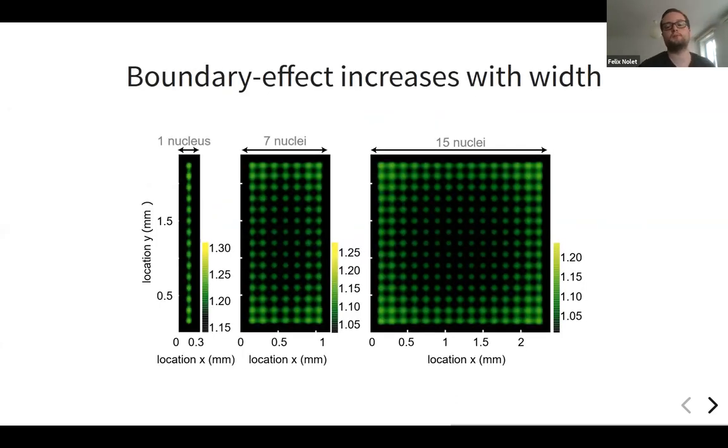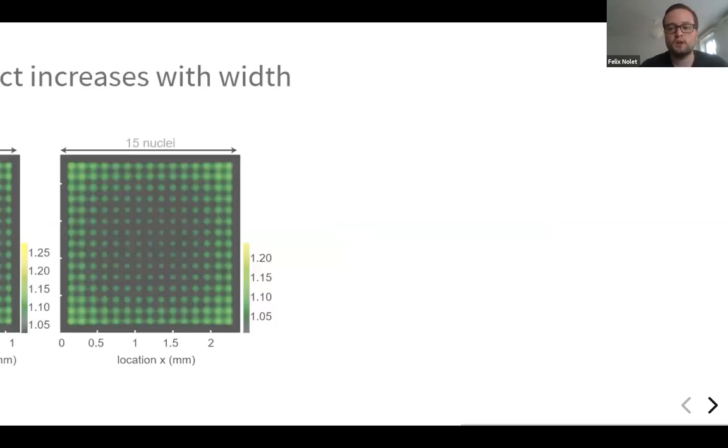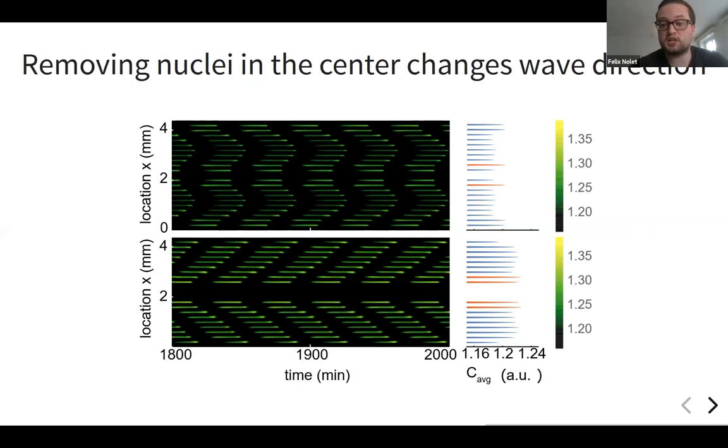We can also simulate the same model in 2D. Then we can change the width of our domain. On the left, you see a tube with one row of nuclei. If you look closely, you can see that the average concentration is a little bit higher for nuclei at the boundary than in the middle. But this effect is much clearer if we increase the width of the tube. For seven or 15 rows when it becomes a square, we clearly see that on average, the nuclei at the boundary will have a higher concentration than the nuclei in the middle of the domain, meaning that we also in that case expect a higher chance of seeing boundary driven waves.